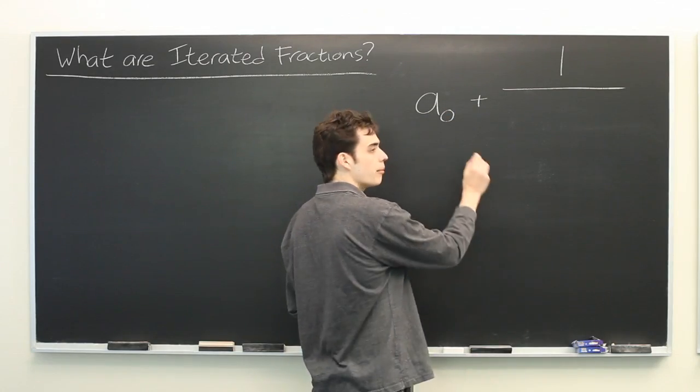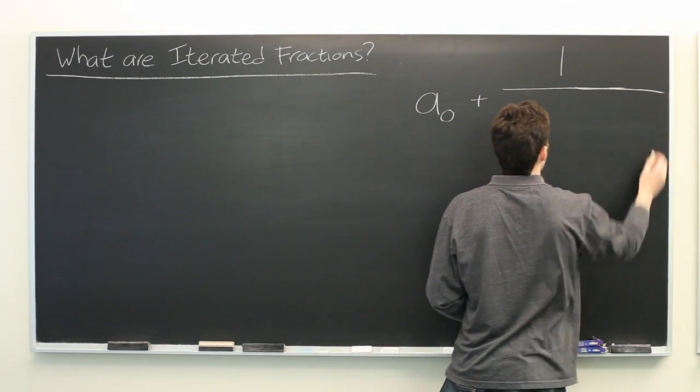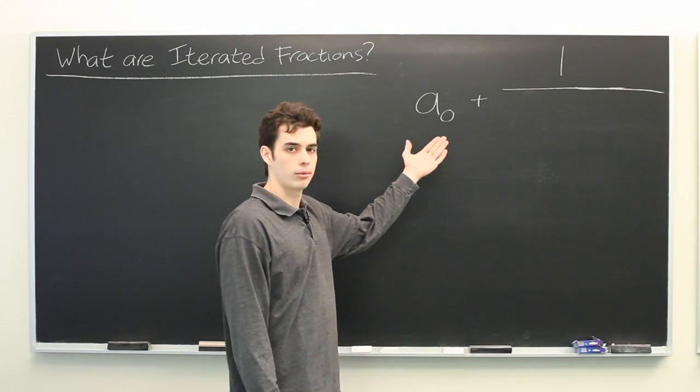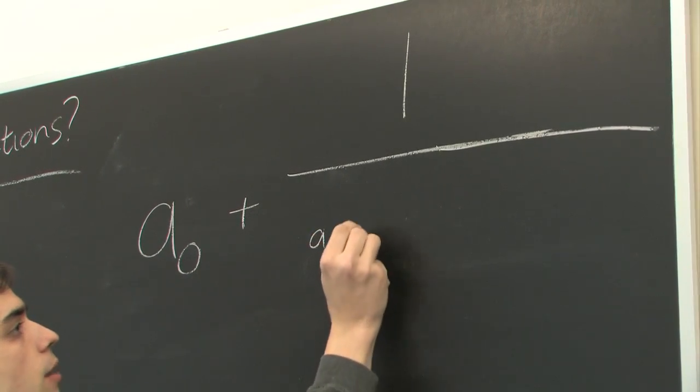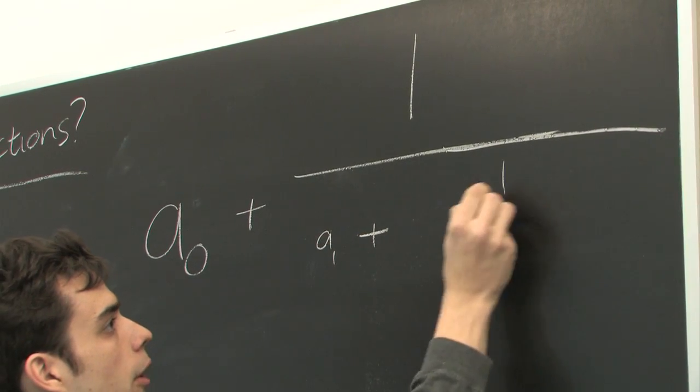Where the denominator of this fraction will be an expression that looks very similar to what we already have, of a1 plus 1 over,